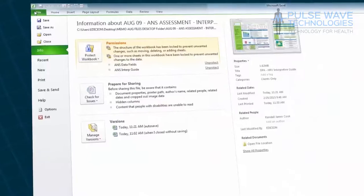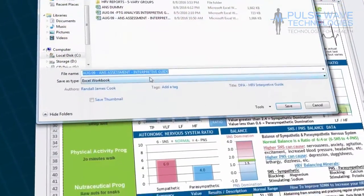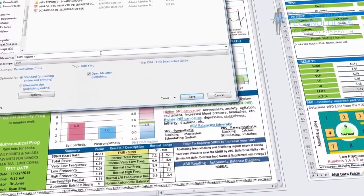After finishing with the data input process, you can print the interpretive guide as a PDF file so you can have a clean overview that can be sent via email.